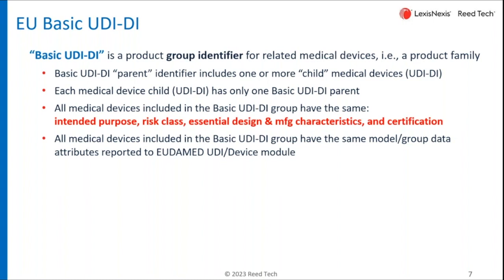There are some rules about how you create this. Things to remember: the intended purpose, the risk class, the essential design and manufacturing characteristics, and the certification — all of those have to be the same for every device in the group. In addition, there are some attributes reported into UDIMED, and all those attributes have to have the same value for each device in that group.